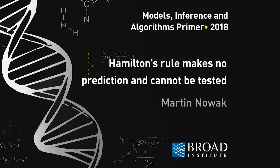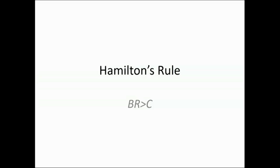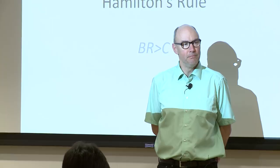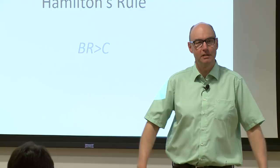This morning, the title of my first talk is Hamilton's Rule. Hamilton's Rule is a very famous rule, well known to everybody who works in sociobiology and evolution, that has to do with social interactions. It was first formulated in 1964 by Bill Hamilton in his PhD thesis, and it has inspired much work over the years. There are many thousands of papers that refer to this rule and put results in context with it, and many papers claim that Hamilton's Rule makes predictions about social situations and evolution.